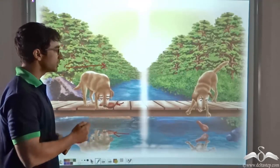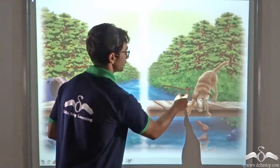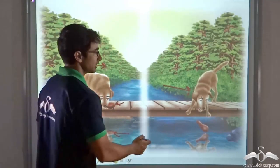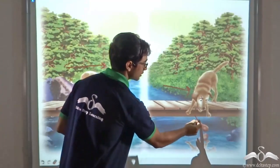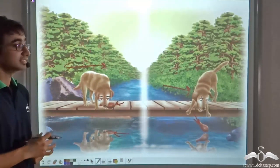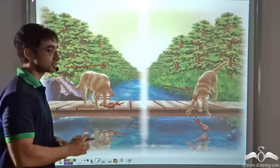So what the greedy dog did was he barked, but then to his disappointment he found that the chicken bone he had fell off and he lost it.